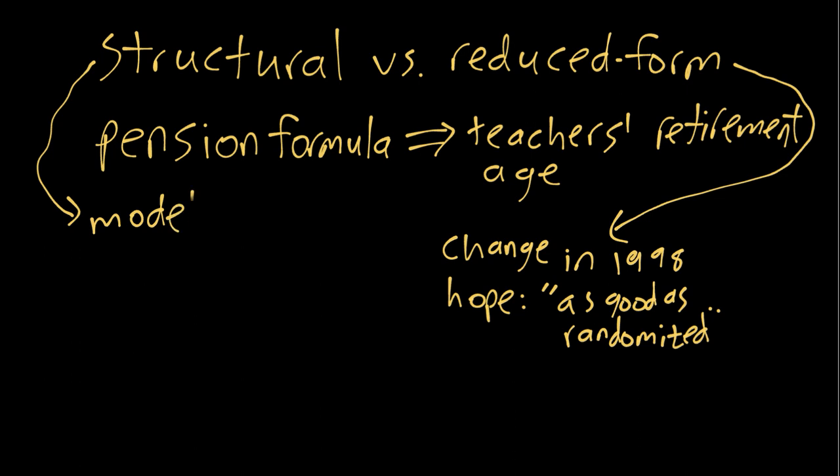So you have some sort of model where the teacher retires if there's some formula where you're thinking about the net present value of your future pension payments and your utility from working.